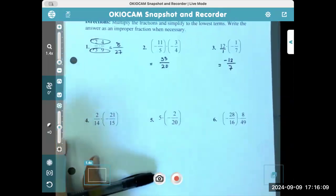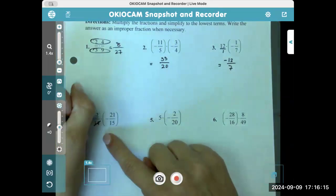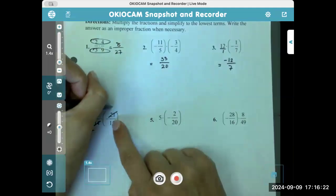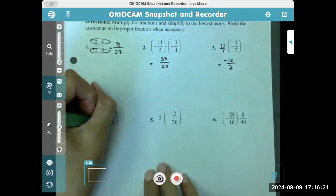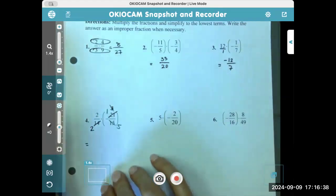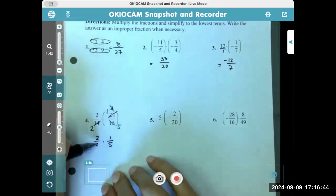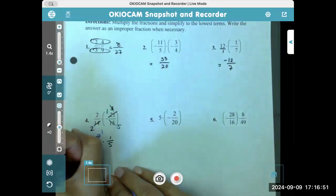So here we can even reduce before we do the multiplication. For example, I know that seven goes into both of these. So seven into 14 is twice and seven goes into 21 three times. So we can do that. And then we can even say, well, three goes into 15 five times. So now, before we even do any of the multiplication, we can say that this is two times two times one fifth. But what's anything over itself? One. Perfect. This is one times one fifth, which is one fifth. Nice.